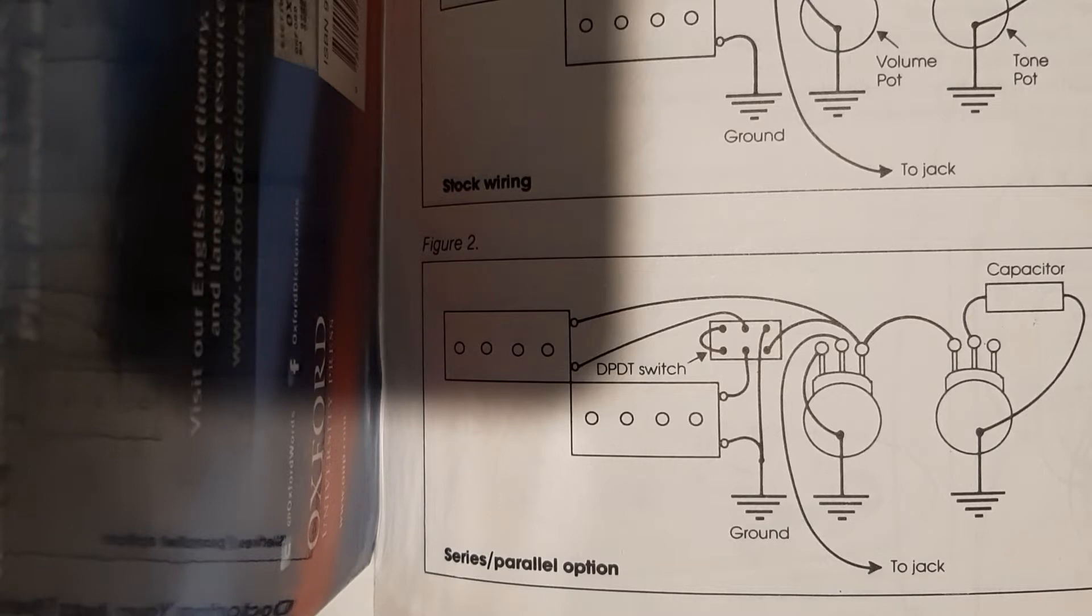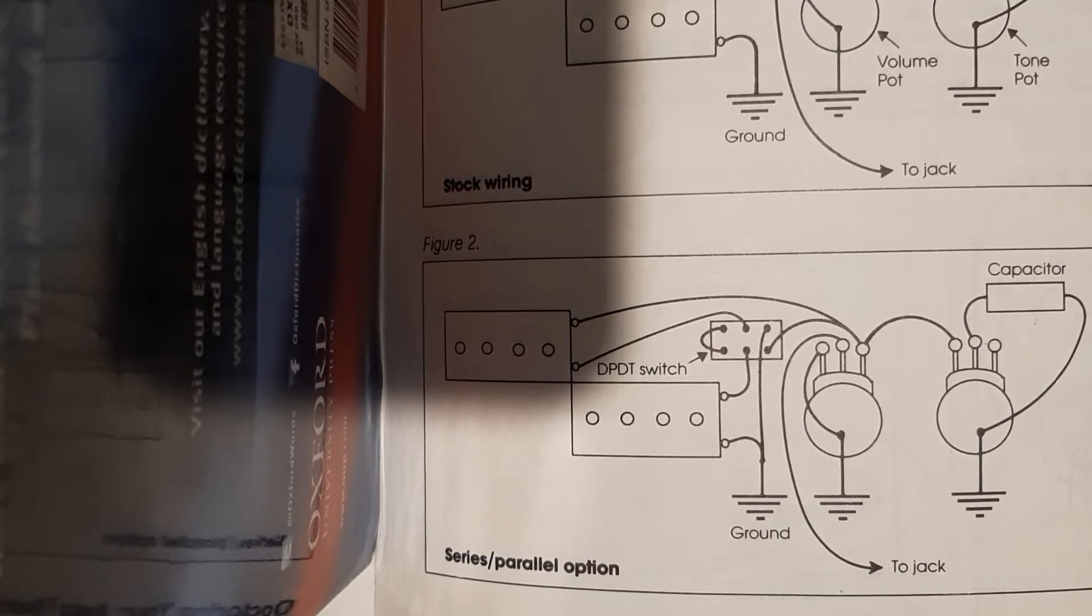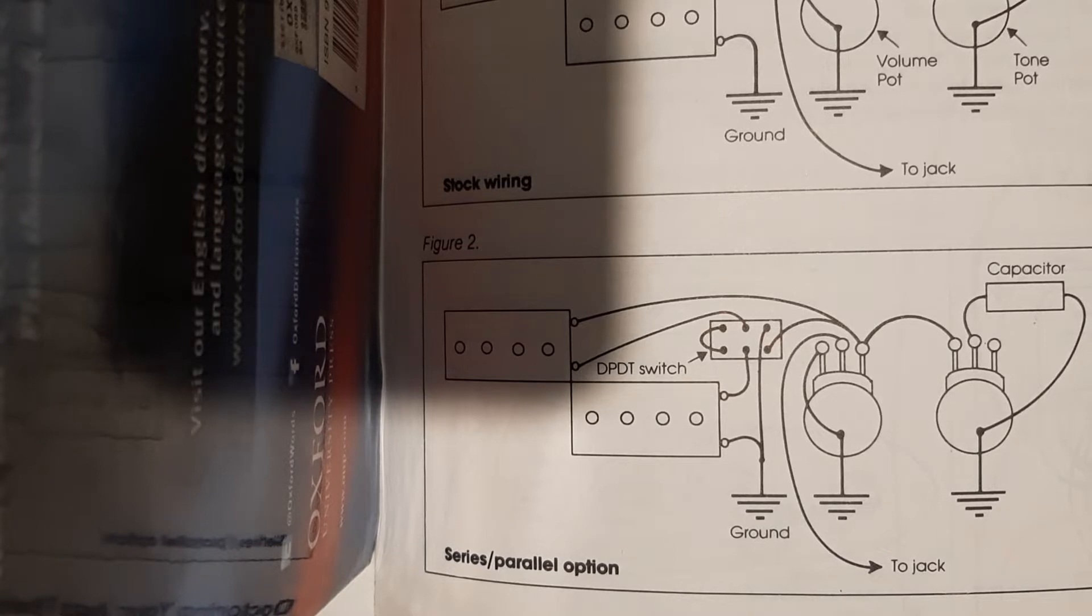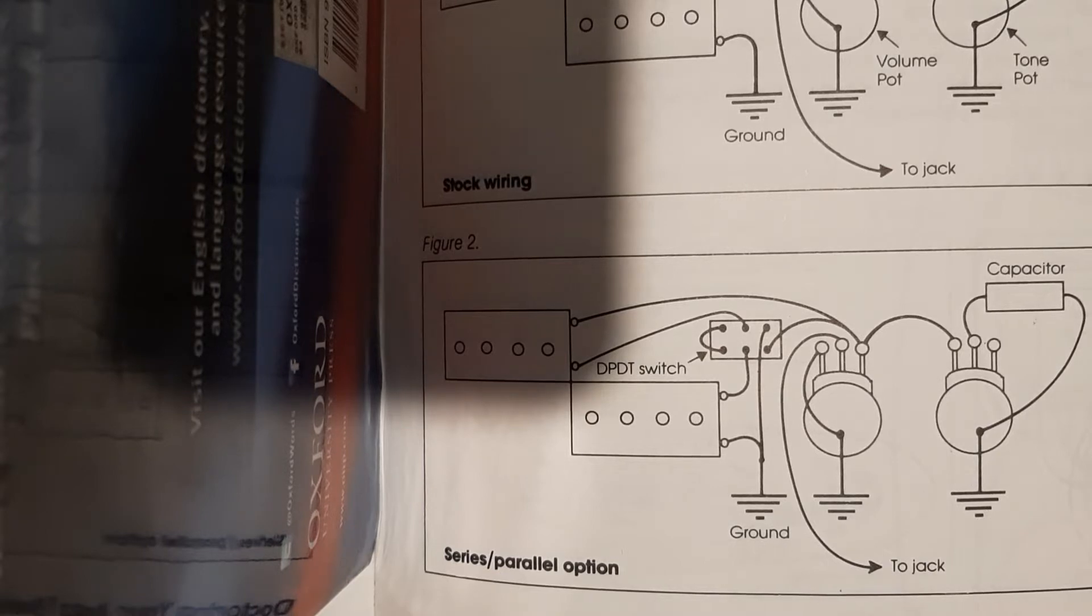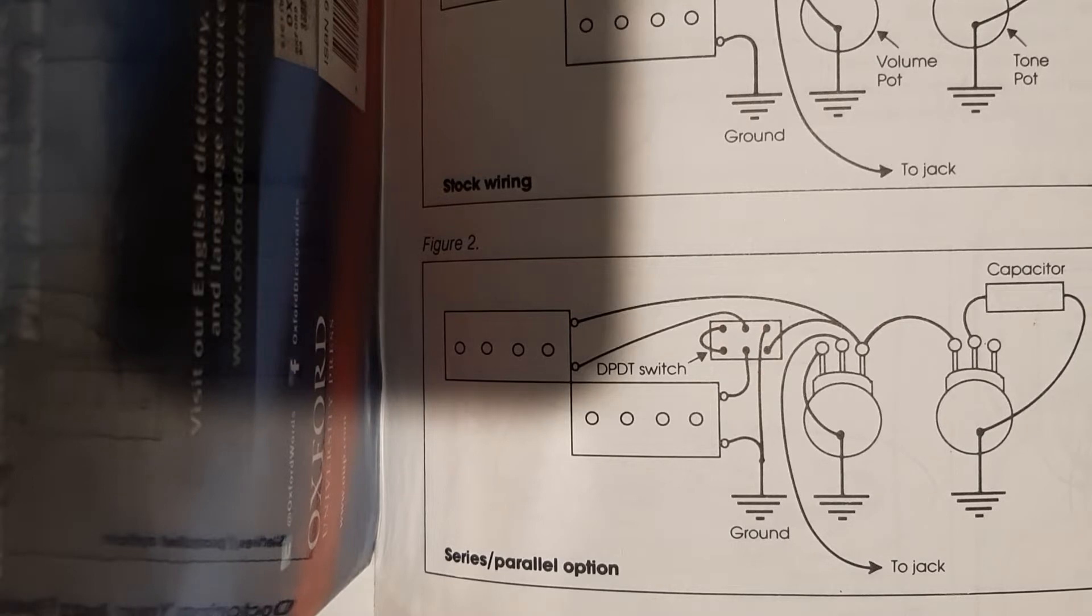We're going to look at this example in this book that I have. This was drawn by Ralph Novak back in the 80s and it shows how to wire a series parallel switch for a P-bass. I'm just going to walk through how this works.